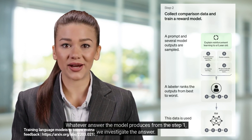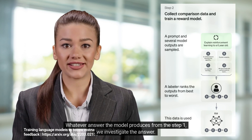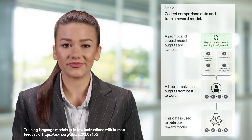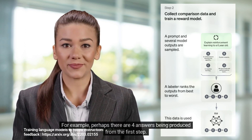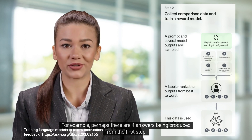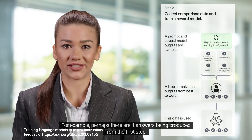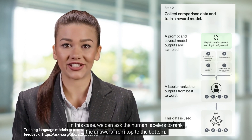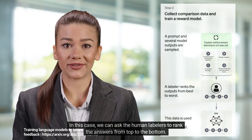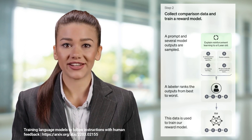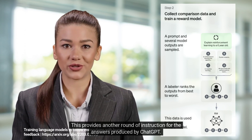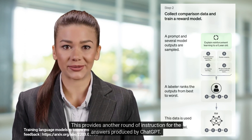Whatever answer the model produces from step 1, we investigate the answer. For example, perhaps there are four answers being produced from the first step. In this case, we can ask the human labelers to rank the answers from top to bottom. This provides another round of instruction for the answers produced by ChatGPT.